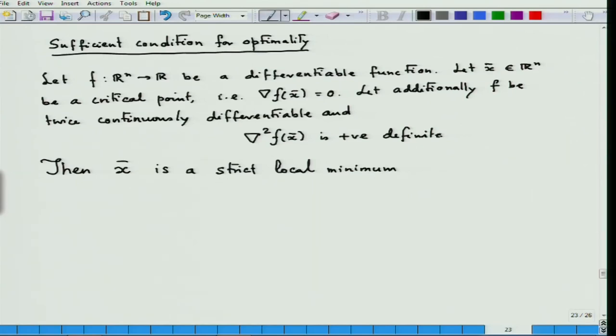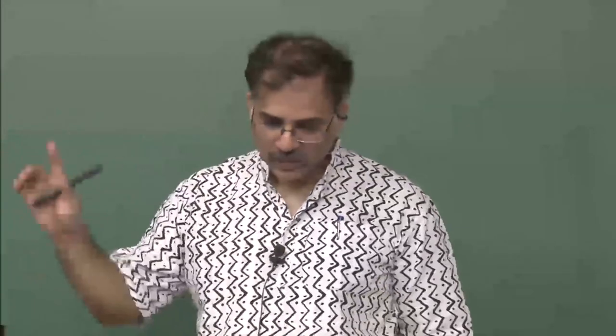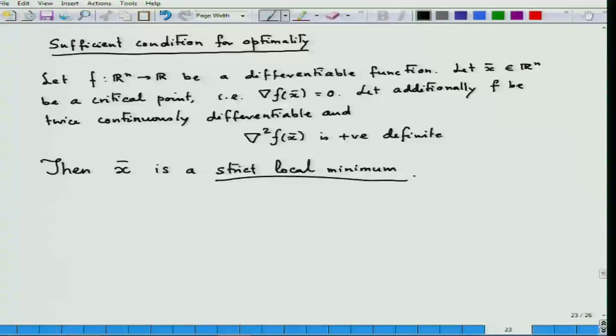The proof of this will be added to the FAQ of this subject and you can see it later on the website of this course. The main conclusion is that it is not just a local minimum — it is a strict local minimum. This forbids a global maximum from taking this position. So we are really getting a local minimum and not being fooled by flat-type functions. This is a very important result that has to be really appreciated.